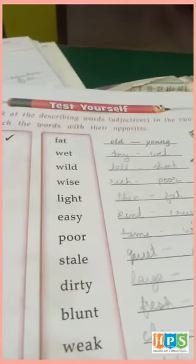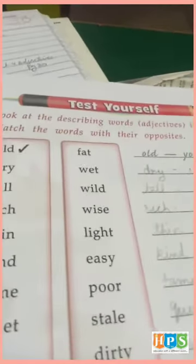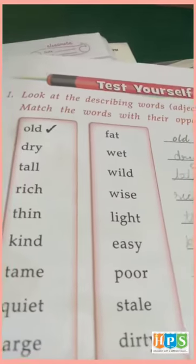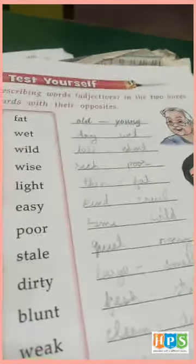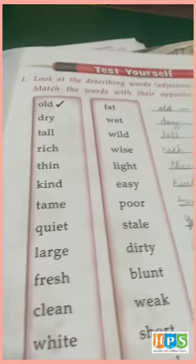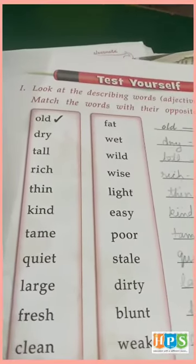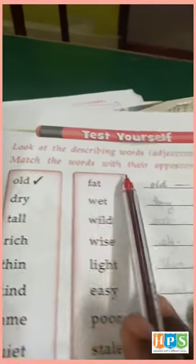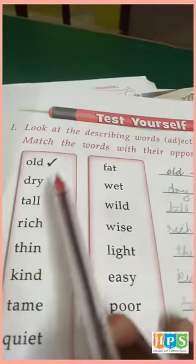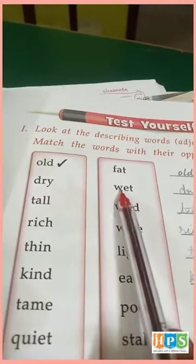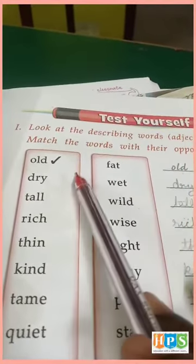Now come to exercise. Look at the describing words — adjectives — in the two boxes. Match the words with their opposites. Describing words hai, opposites hai, in ko match karna hai. Old — young.